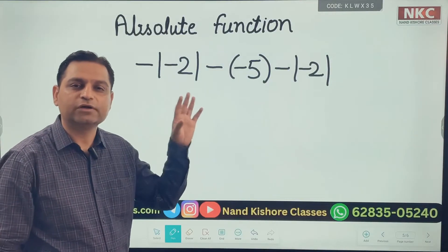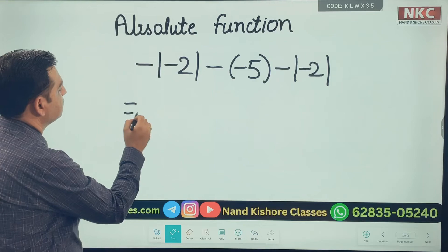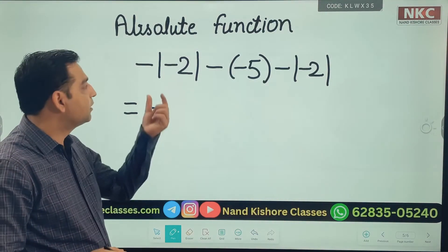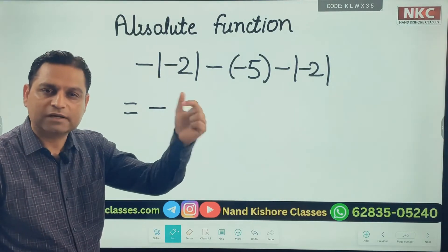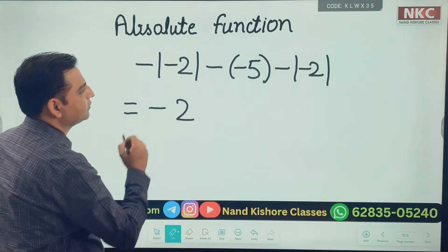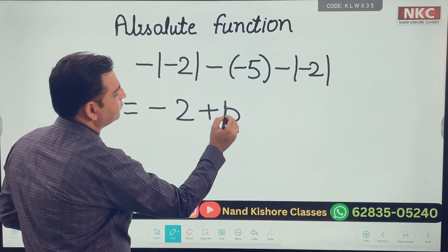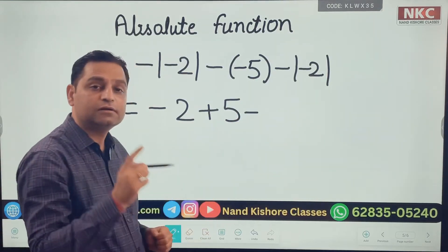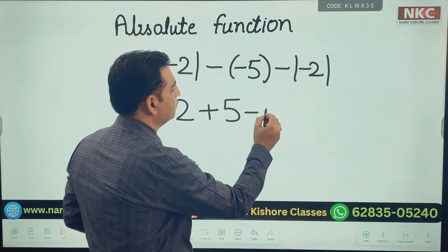This minus sign will remain as it is. And absolute value function changes this minus two into plus two. So it is only two as the answer for that. This minus and minus becomes plus five. And the next minus sign remains as it is. Absolute value of minus two is two.